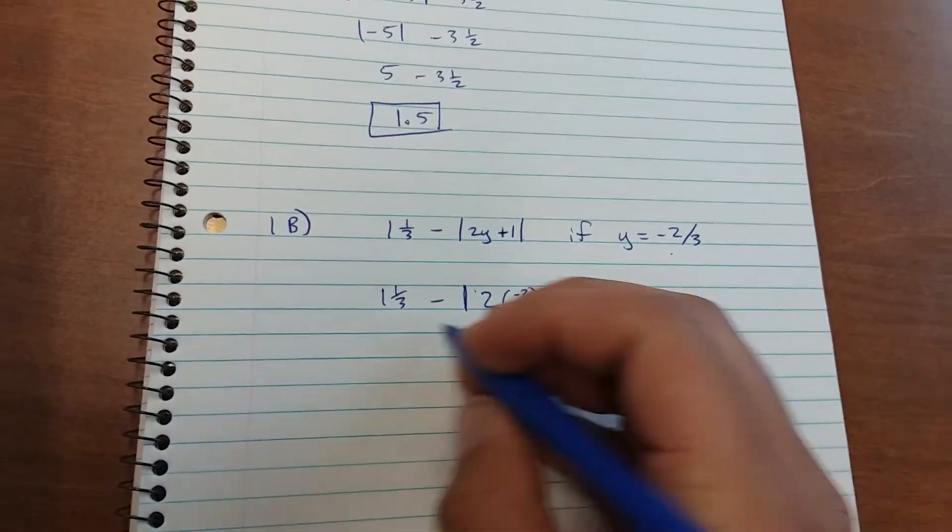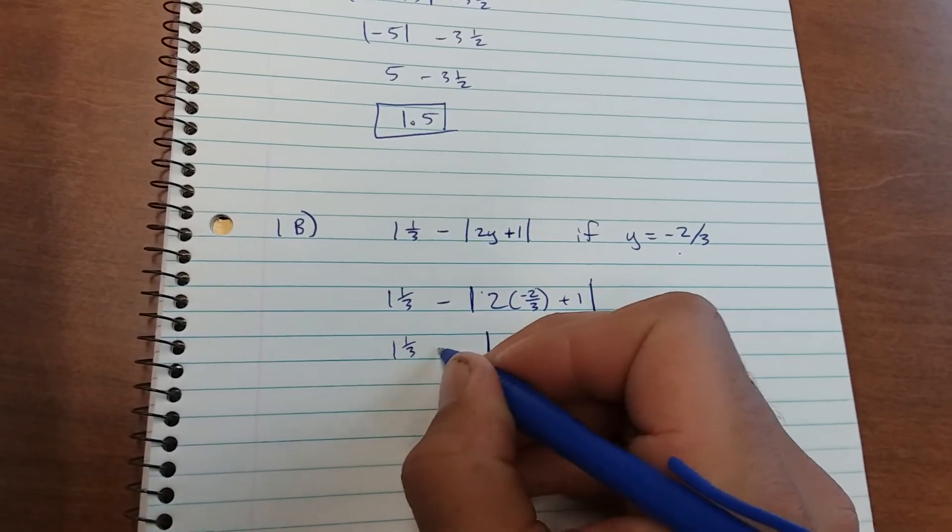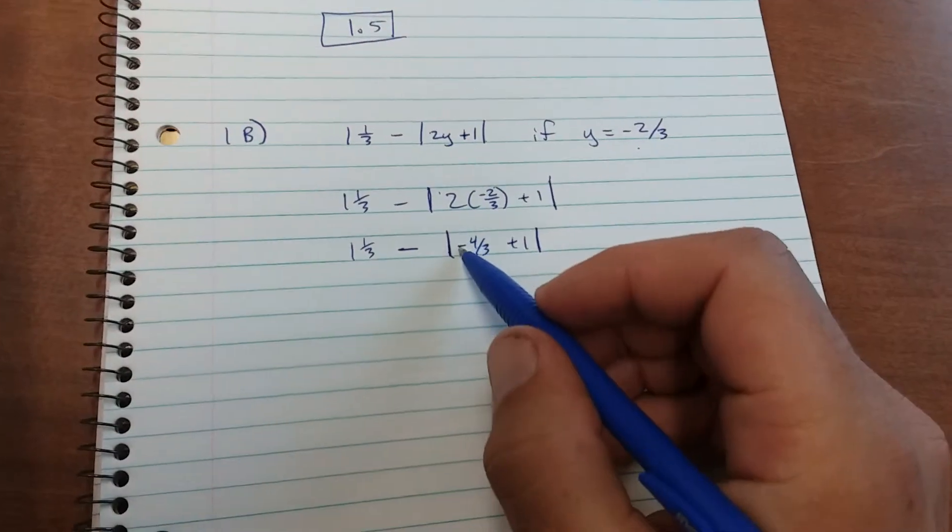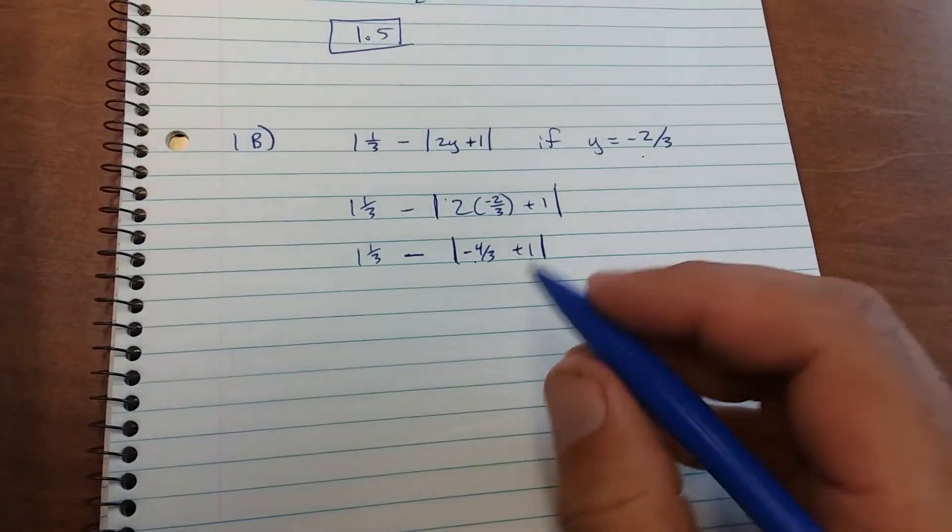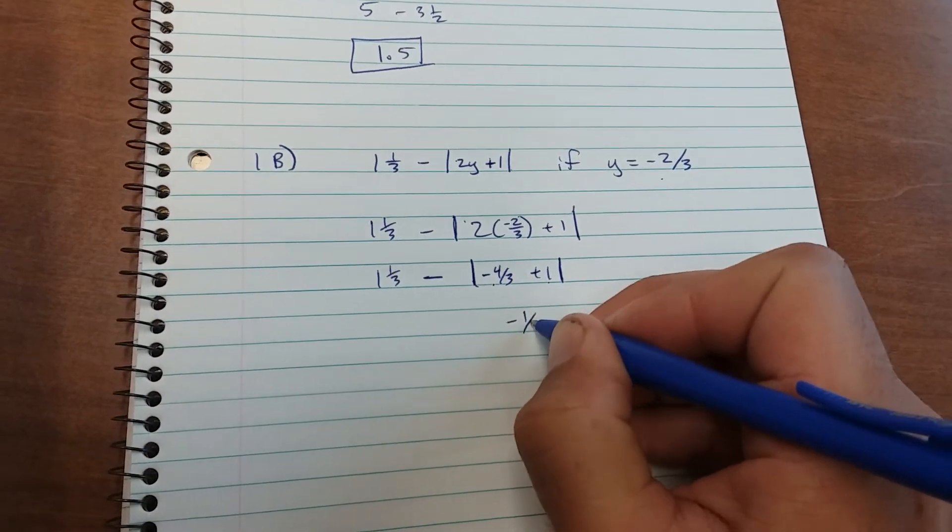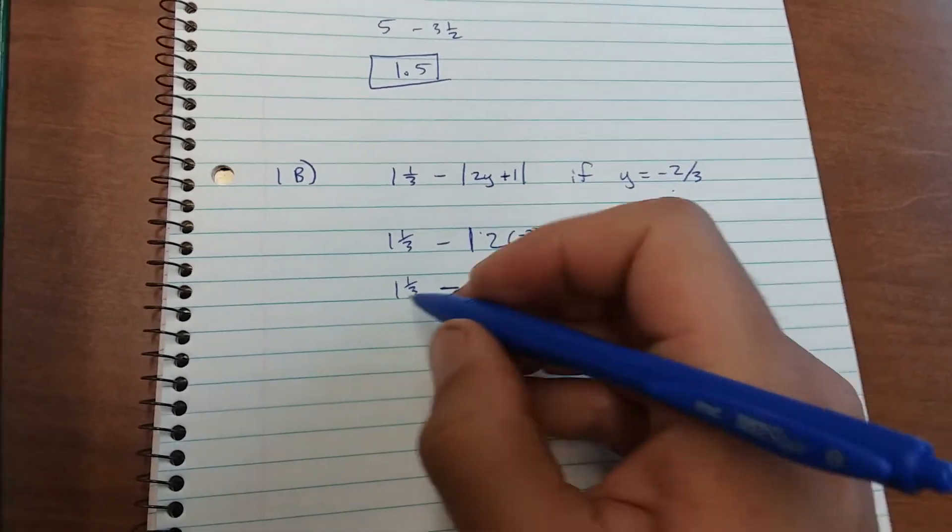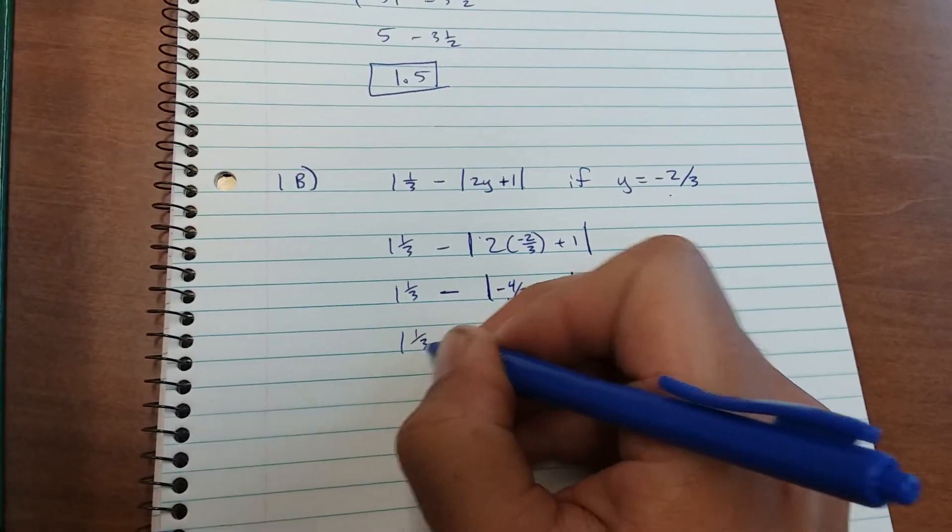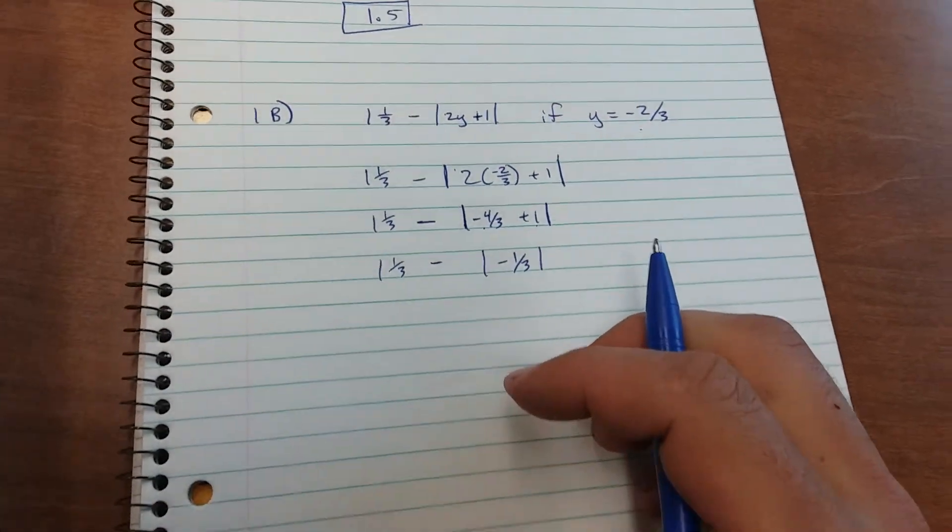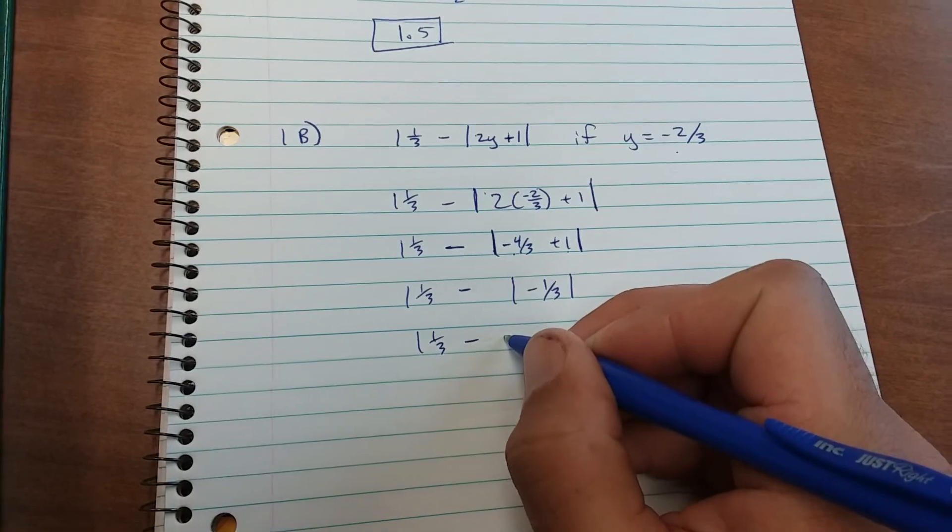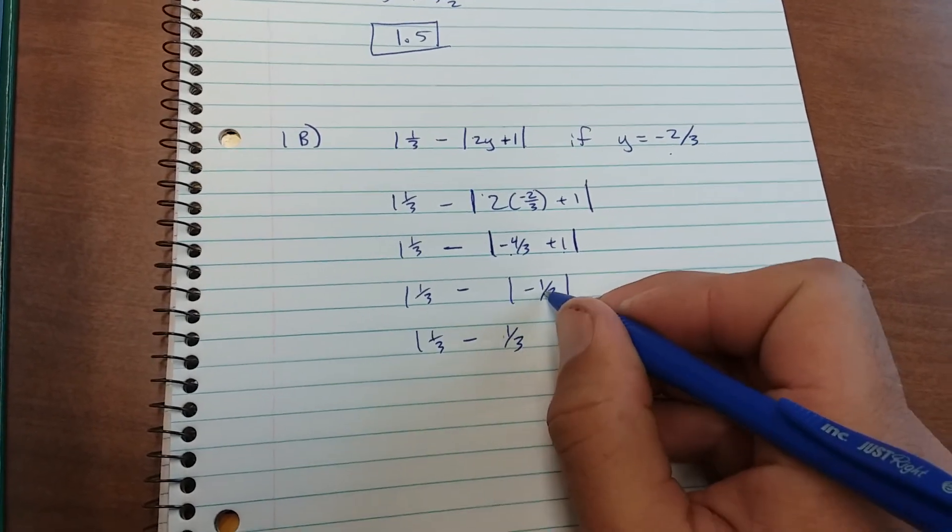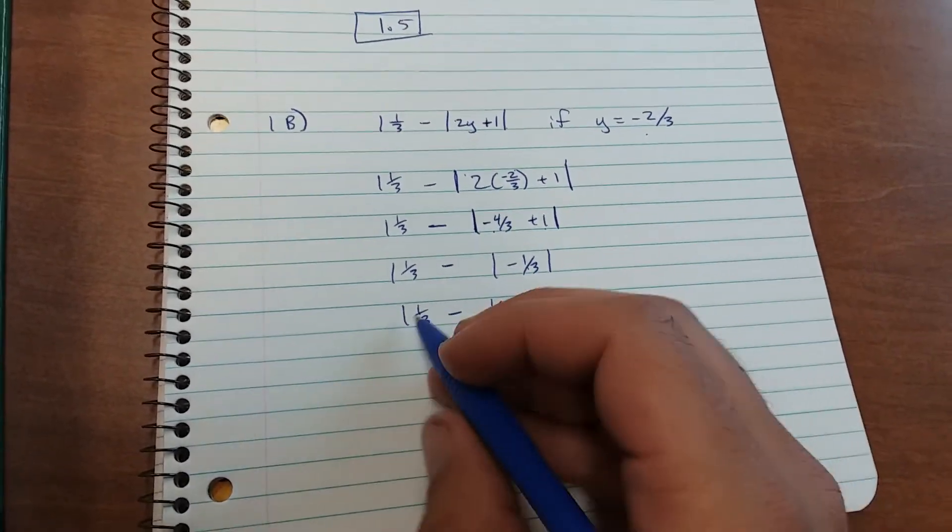Plus 1. I'm going to bring down my 1 and 1 third here. Negative 4 thirds plus 1 is negative 1 third. So you get 1 and 1 third minus the absolute value of negative 1 third. So you have 1 and 1 third minus 1 third because the absolute value of negative 1 third is 1 third. Subtract, you get 1.